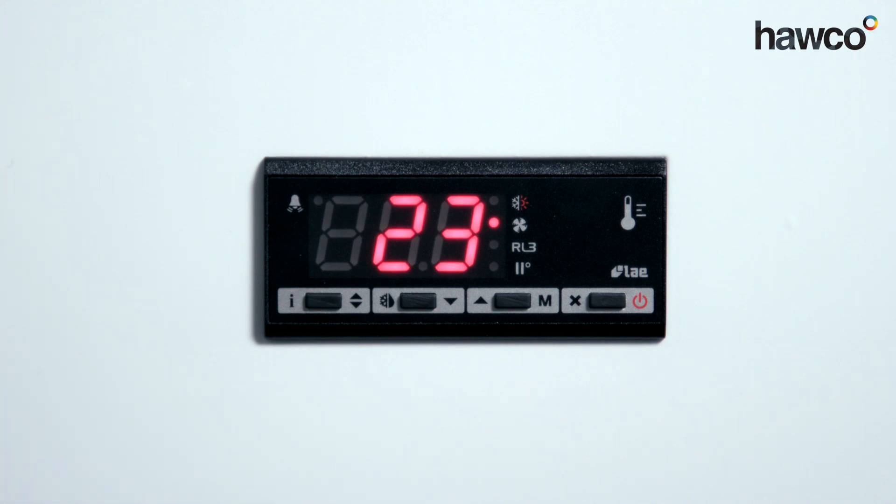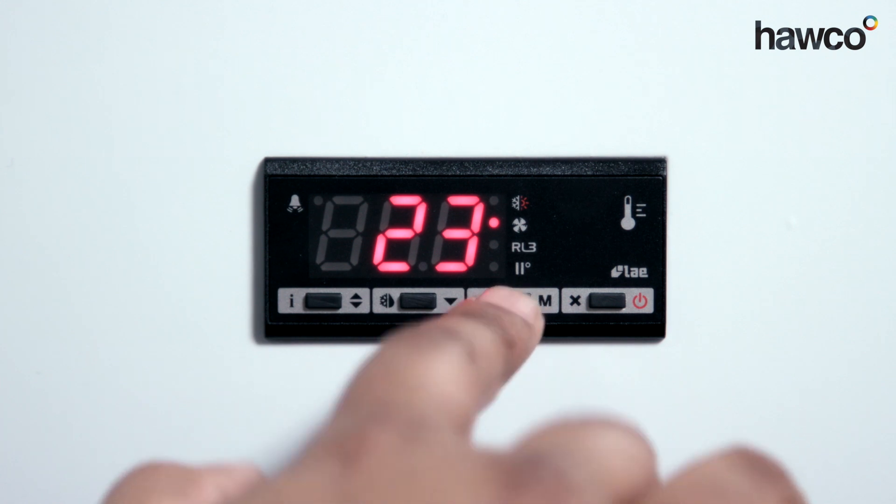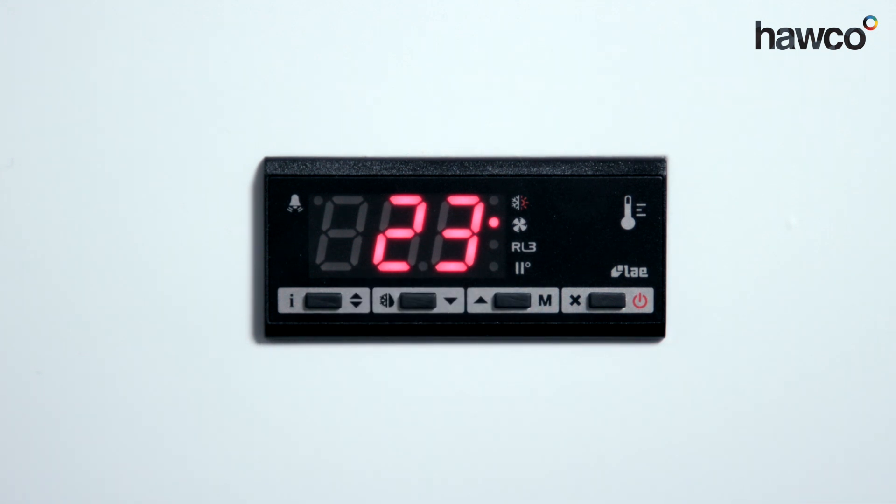One of the questions we frequently get asked is how to set up the lighting function on the controller, whether it be automatic via a door or manual by a push of a button. In this instance, we're going to set it up with the push of a button so that on the manual button at the front, every time you push and hold the button, the light will come on.